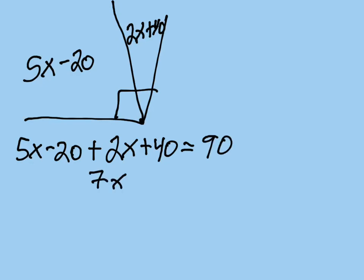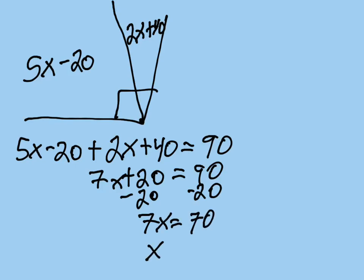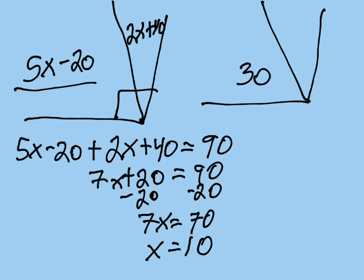Well, that gives me 7x plus 20 equals 90. And then we subtract 20 from both sides. We get 7x equals 70. So, x equals 10. So, we know x equals 10. Now, that might be the question. What is x? But what if it says, what are the two angle measures? Well, that's easy enough to do. I take that 10 and I plug it back in there. And I get 50 minus 20, which is 30. And then I get 2 times 10, which is 20, plus 40, which is 60. And we check. Do those add up to 90? Yes.